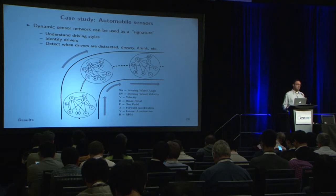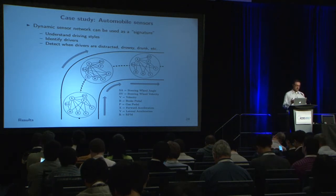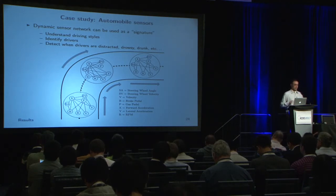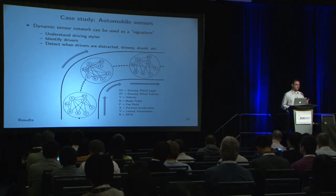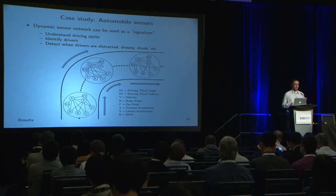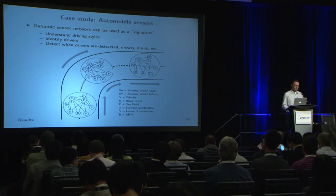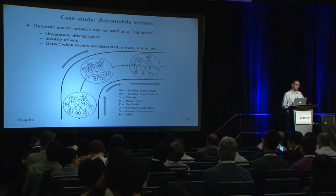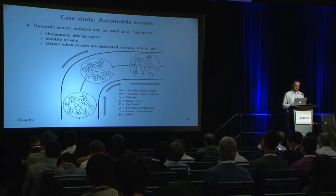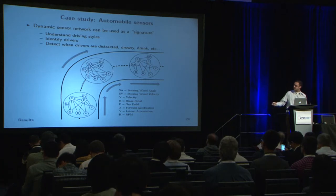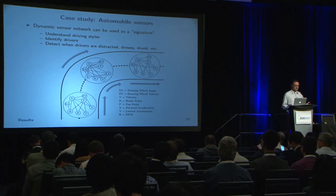Our last case study uses real-world automobile sensors. We took eight different sensors and plotted the time-varying network across a single turn made by a real-world driver on a real road. This sensor network acts as a signature for driving style — some people brake harder, turn the wheel earlier, or go through turns faster. It could even detect if a driver is distracted, drowsy, or drunk. For example, during the turn, the steering wheel angle becomes a highly central node in the network, whereas during straightaways it doesn't affect any of the other sensors.